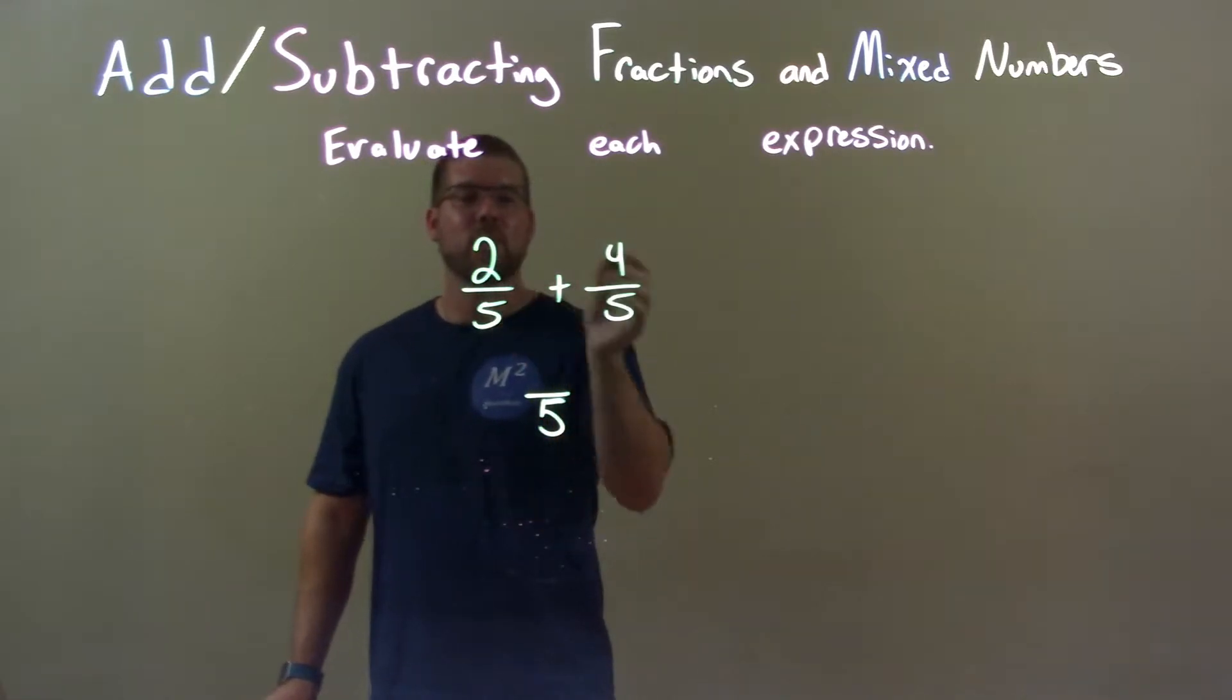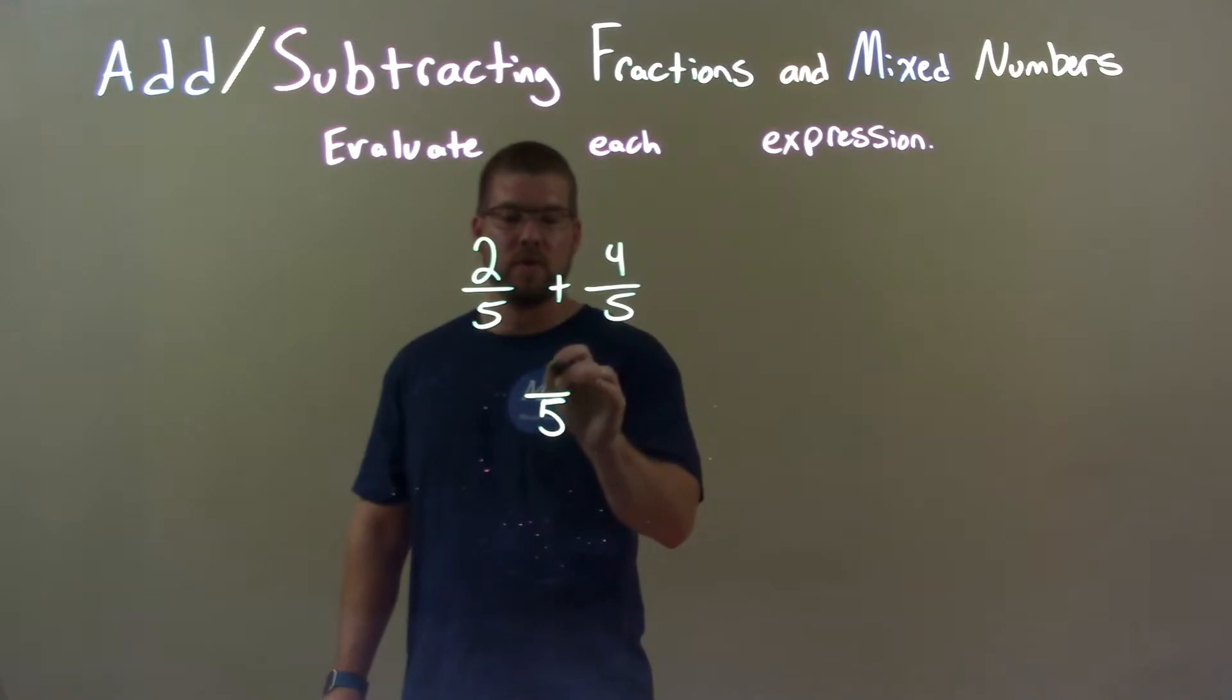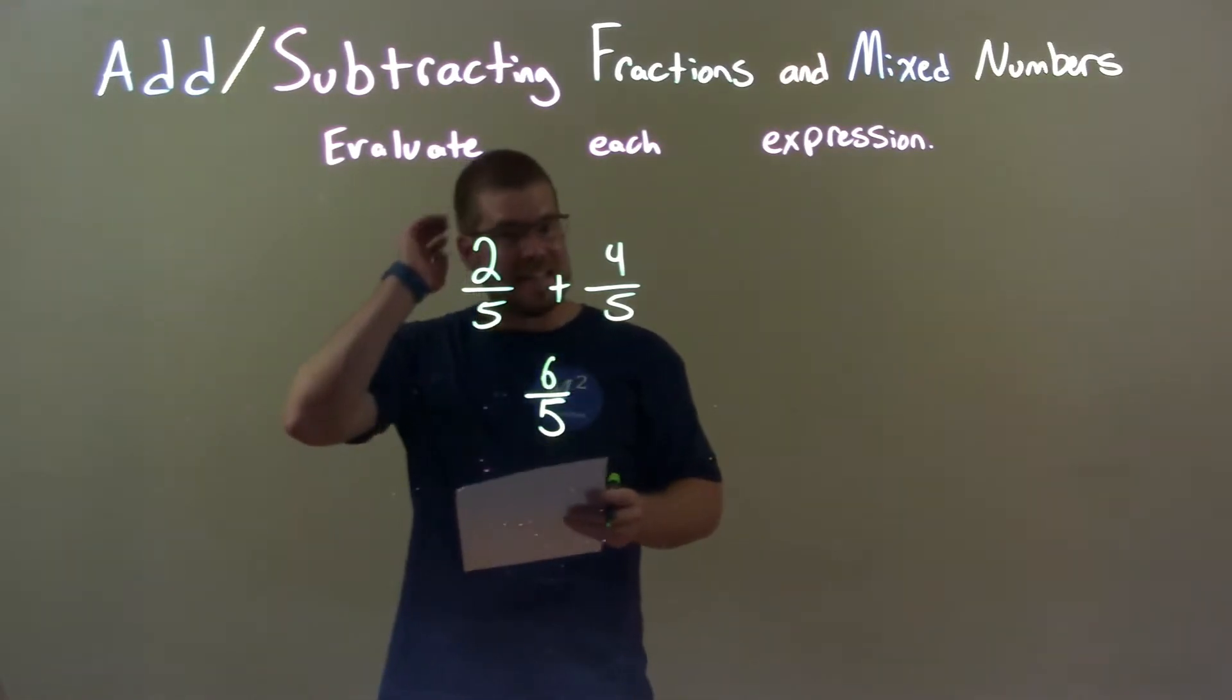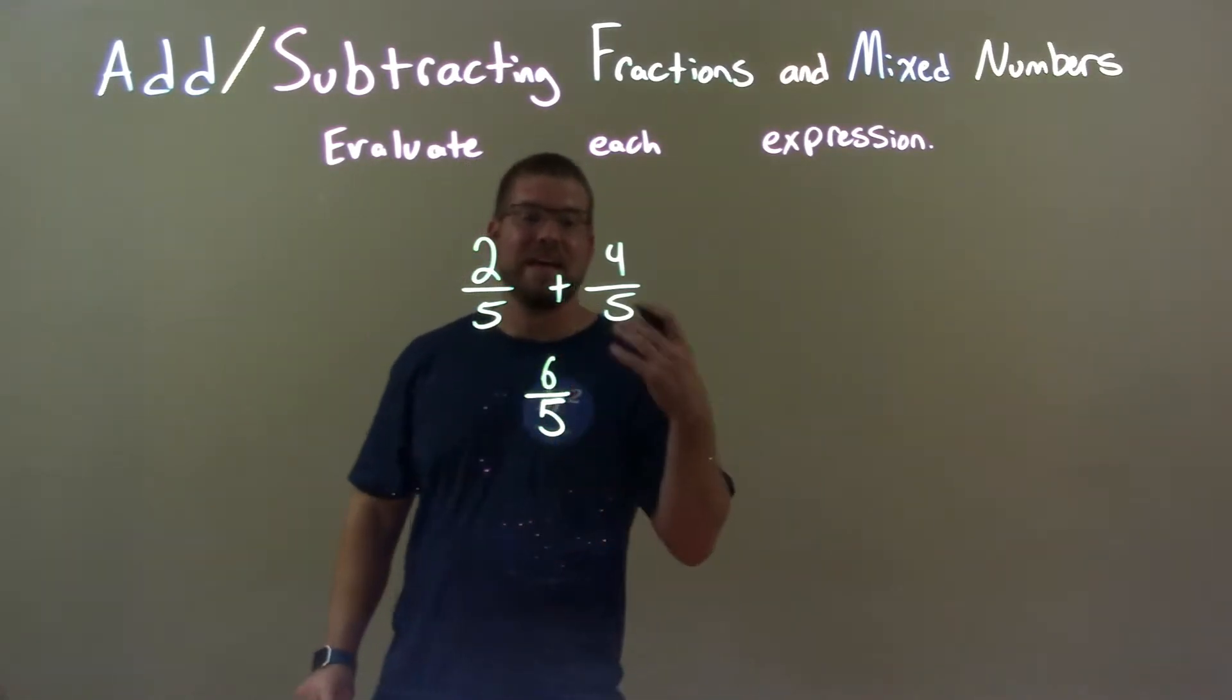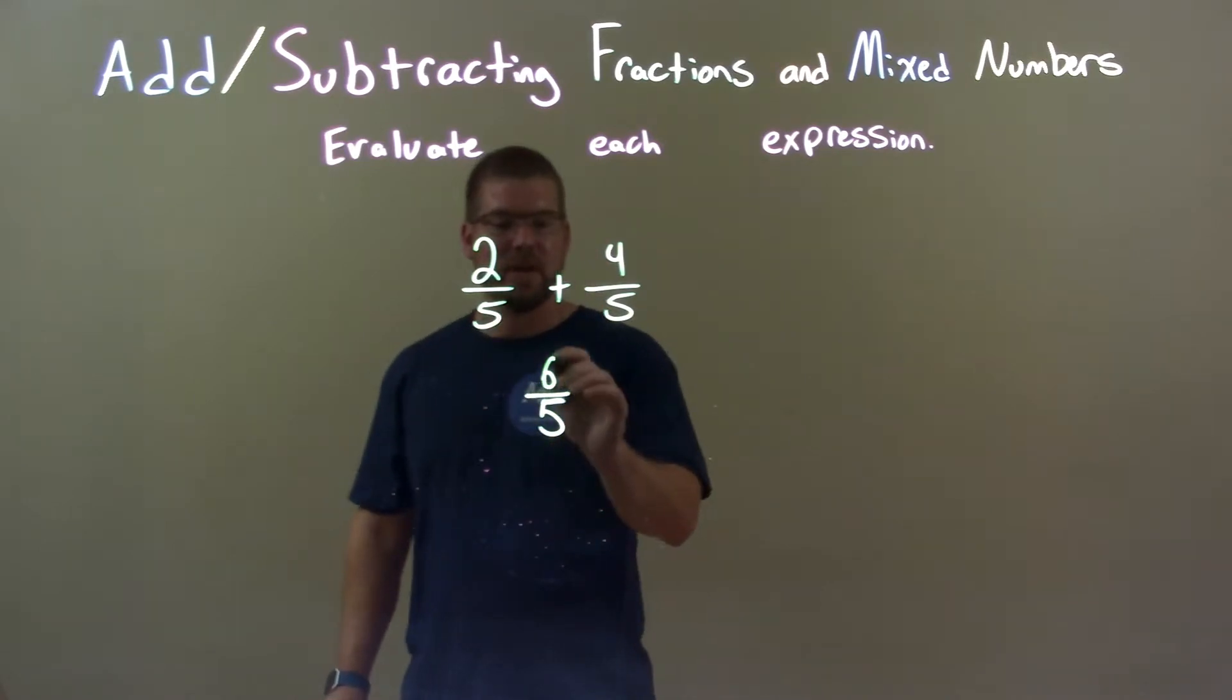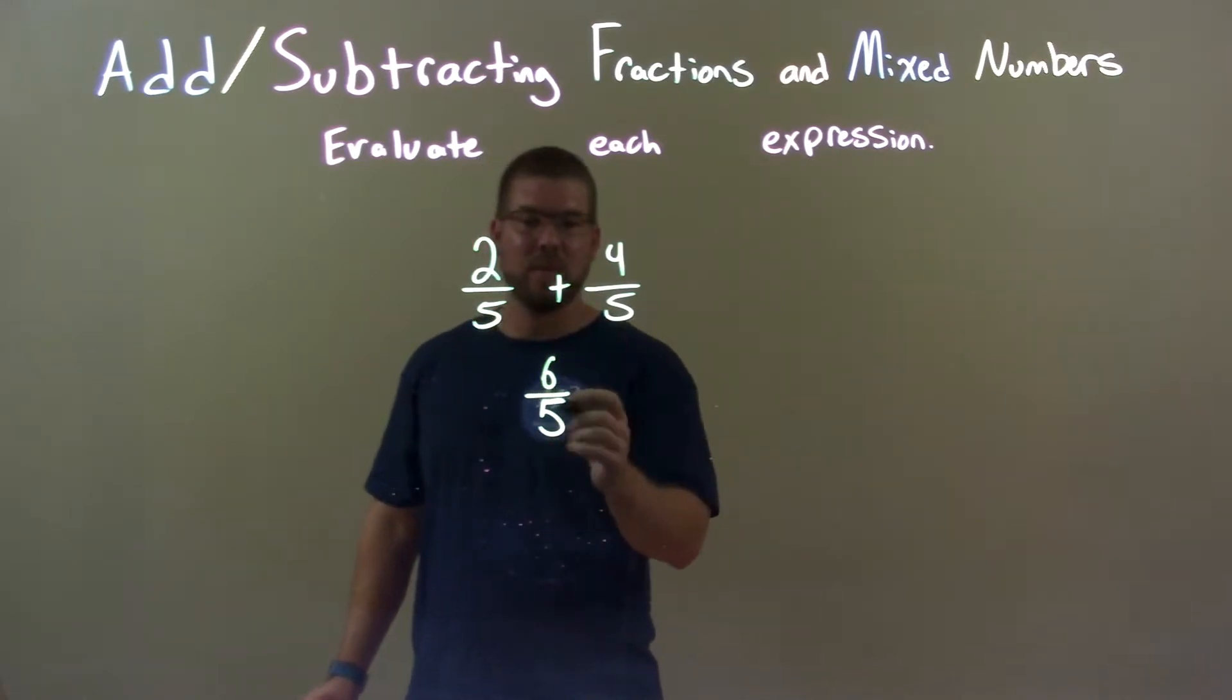Now we just have to worry about adding the numerator. 2 plus 4 is 6, so now we just have 6 fifths here. And that's it. That's all we're going to simplify here. We just have 6 fifths. There's nothing we can break it down. So 6 fifths is our final answer.